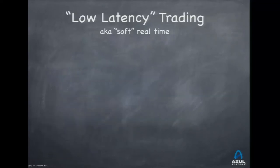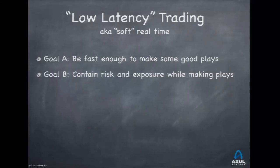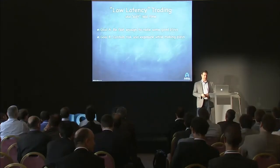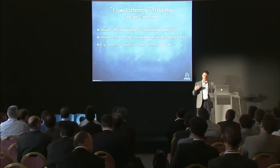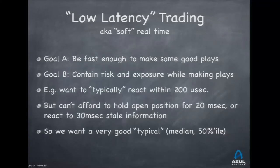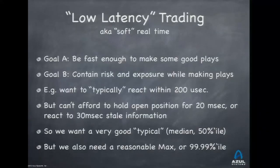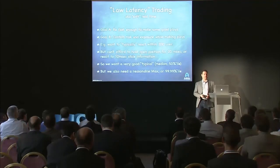Low-latency trading or soft real-time — common in old telco as well — has two goals: be fast enough to make good plays, and contain the risk of freezing mid-trade and being exposed to big market fluctuations. We want a very good typical — good 50th or 90th percentile — but also very contained maximums or 99.9th percentile. Soft real-time typically has both speed and outlier-containment requirements.